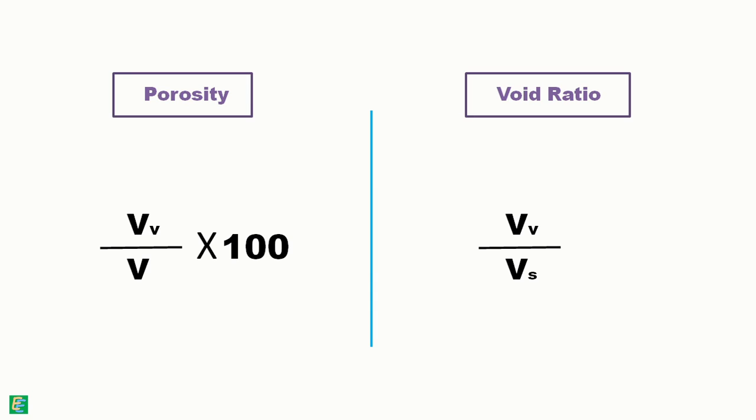In the equation of porosity and void ratio, we can see that on volume change, porosity has two variables while void ratio has only one variable.